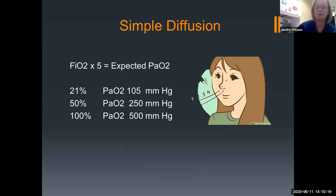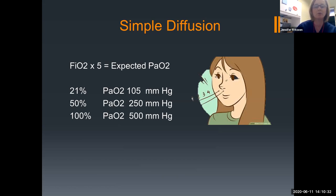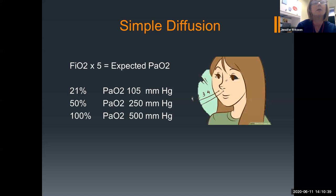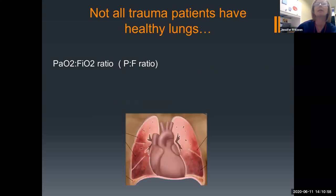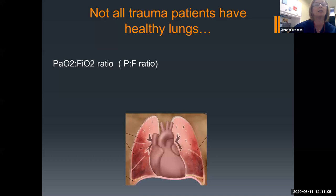If we want to talk about simple diffusion in anybody with normal lungs, you take whatever oxygen percentage you're breathing in, times five, and that should tell you your expected PaO2. All of us are on 21%, so our PaO2s are probably in the low 100s. If I put somebody with normal lungs on 50%, you're going to have a PaO2 of 250. But for a patient with a pulmonary contusion and injured lungs, we can look at a PF ratio to assess oxygenation ability.